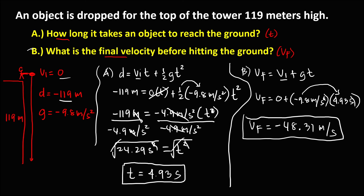That equals negative 48.31 meters per second. The final velocity is negative because the object is going down.